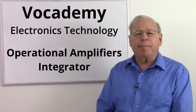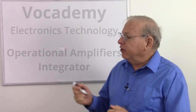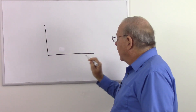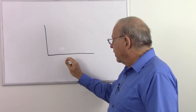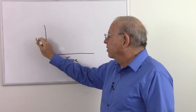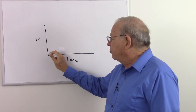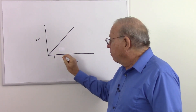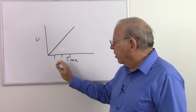Today I am going to talk about the op-amp integrator. What the integrator does is it gives us a voltage that changes linearly with time. So the horizontal axis is time, and this is voltage, and the integrator would give us a voltage that changes in a straight line.